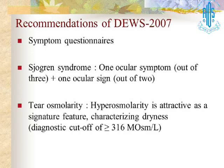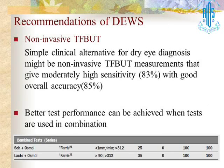So, what are the recommendations of DEWS? One is the symptom questionnaire, which Jayesh has already highlighted. For Sjogren's syndrome, we should have one ocular symptom and one ocular sign. For tear osmolarity, hyperosmolarity is attractive as a signature feature characterizing dry eye — it's a very specific test, and if available, it's a very good tool to objectively quantify dry eye. I have told you about non-invasive tear film breakup time. One thing I must say in the end: it's always better to combine the tests, like the earlier three tests I highlighted, as it really gives us a high specificity and high positive predictive value. Thank you.